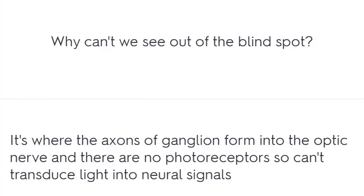Why can't we see out of the blind spot? It's where the axons of ganglion cells form into the optic nerve, and there are no photoreceptors, so light cannot be transduced into neural signals.